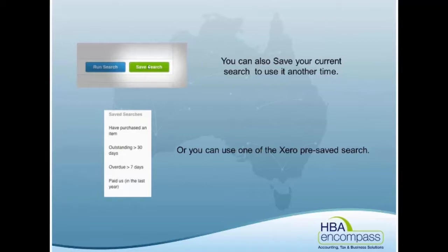You can save your search, so if you want to go back and re-run it — you might run it once every six months — you can do that. There are also a few of Xero's pre-saved searches. The outstanding number of days option is another feature for chasing up your debtors, as opposed to just sending statements out from the accounts receivable area. You can target it to those that are outstanding for specific periods of time, and you might run it each week if you wanted to.